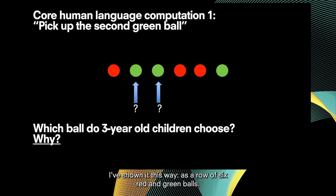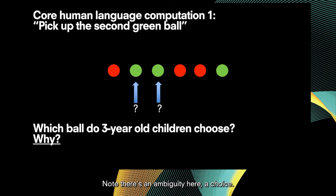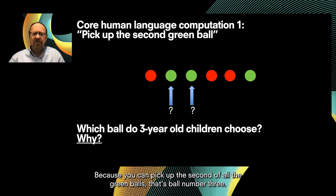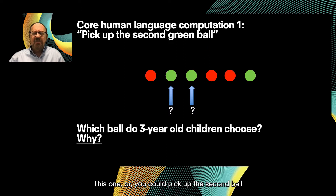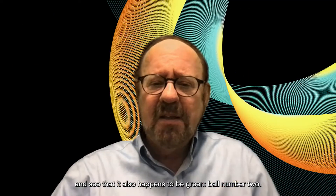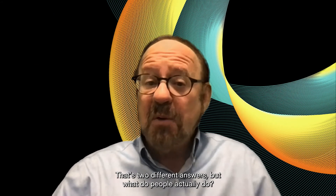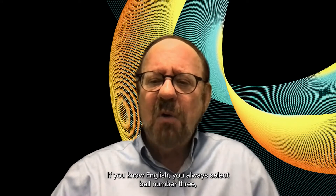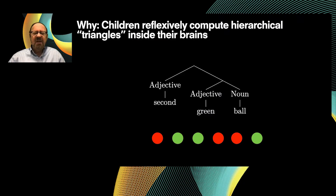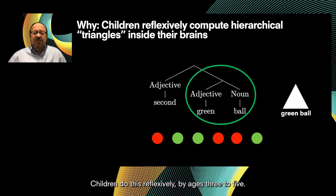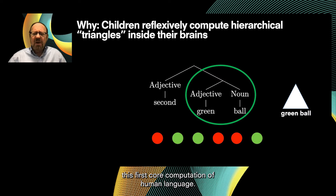Let's begin with something simple illustrating human language's first core computation. I've shown it as a row of six red and green balls. Someone asks: pick up the second green ball. There's an ambiguity here — you could pick up the second of all the green balls, that's ball number three, or you could pick up the second ball and see that it happens to be green, ball number two. That's two different answers. But if you know English, you always select ball number three.